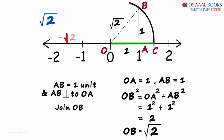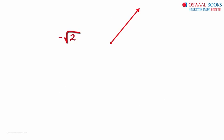And if we need minus root 2, then we cut the same arc on the other side of O. Let's quickly see how we can actually construct it.